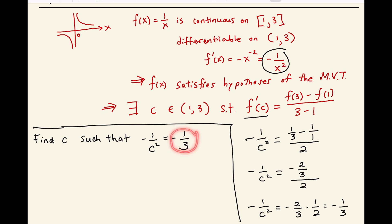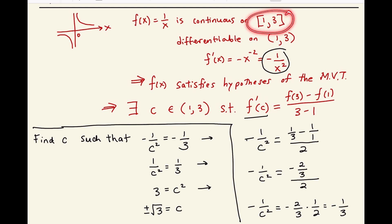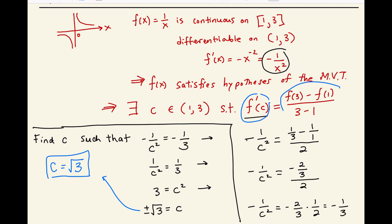We want c such that the slope of the secant line equals the derivative at c. This is the same as saying 1 over c squared equals 1/3, multiplying both sides by negative 1. That gives us c squared equals 3, so c equals positive or negative root 3. We don't need the negative root because we're looking at the interval (1, 3), so c equals positive root 3.